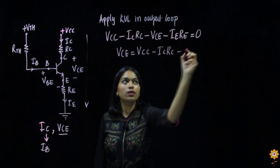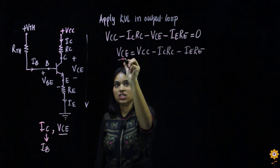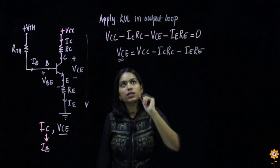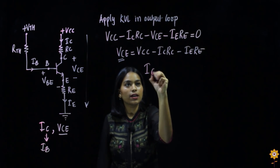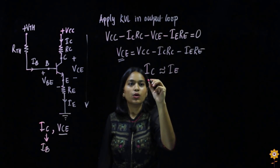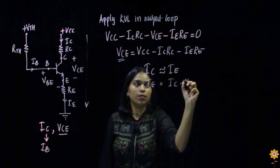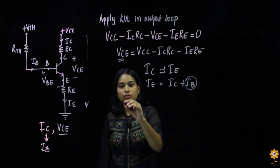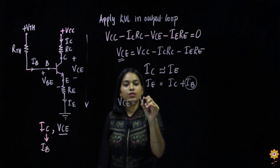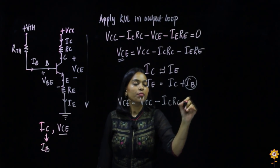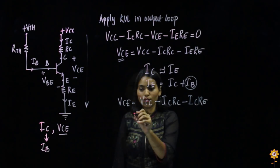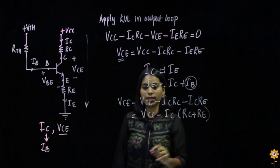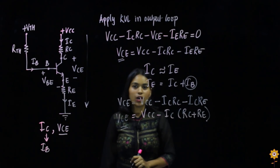Taking Vce to one side gives us the equation for Vce. To simplify with one current term, since Ic is approximately equal to Ie (because Ie equals Ic plus Ib and Ib is very small), we write Vce equals Vcc minus Ic·Rc minus Ic·Re. Taking Ic common: Vce equals Vcc minus Ic times (Rc plus Re). This is the final equation for Vce.